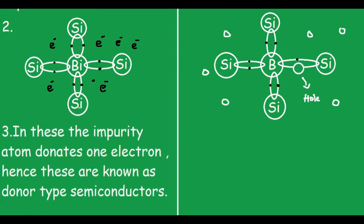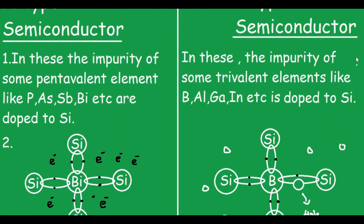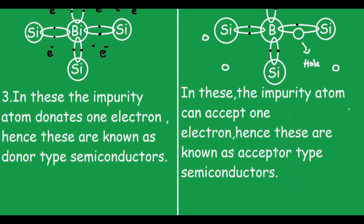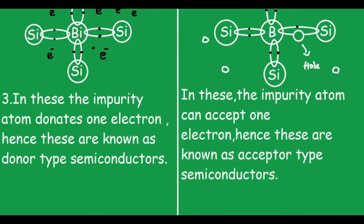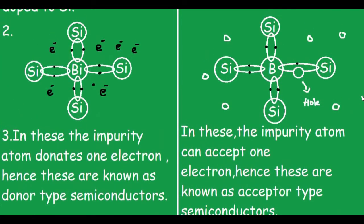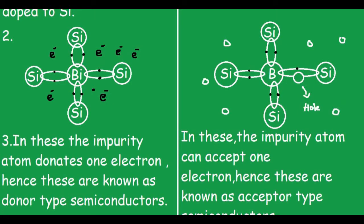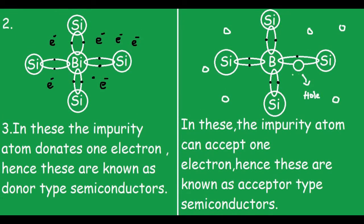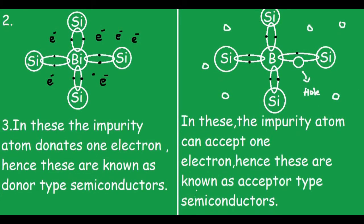For the N-type semiconductor, the impurity atom donates one electron, hence these are also known as donor-type semiconductors. Here, bismuth is donating one electron and from the nearest such lattice arrangements one electron is generated. For the P-type semiconductor, the impurity atom can accept one electron, hence these are known as acceptor-type semiconductors. Boron has one electron short with this silicon, so it is capable of receiving electrons from any nearby source.